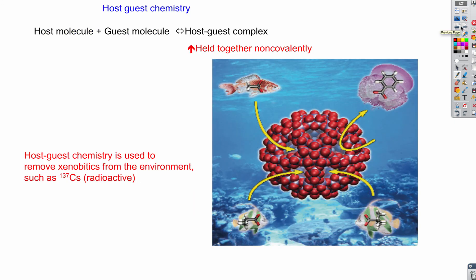Finally, the last concept to appreciate is host-guest chemistry, which came from the concept of enzymes and the lock-and-key model. What we do is make a host molecule that is cage-like and very large, and then the guest molecule — usually a xenobiotic or other unwanted substance — is trapped inside it and then removed from the system.